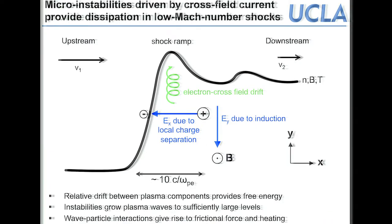Before showing data, here's how magnetosonic shocks work. Plasma comes in from the left at super-Alfvénic speed, gets decelerated in the shock, and comes out sub-Alfvénic. Density, magnetic field, and temperature all jump across the shock. Based on the idea that these shocks evolve from a magnetosonic soliton that steepens in time, the shock thickness is relatively small — on the order of the electron skin depth, comparable to the electron gyro radius, and much smaller than the ion gyro radius.